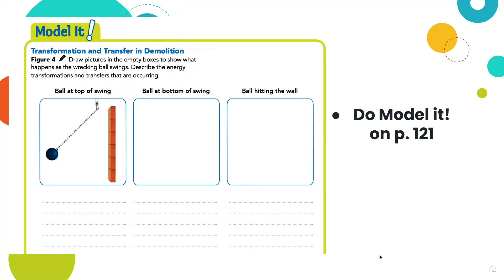On page 121 there's a wrecking ball about to hit a wall. Draw pictures in the empty boxes to show what happens as the wrecking ball swings: the top of the swing is drawn for you, then draw what it looks like at the bottom of the swing before it hits the wall, and finally as it's hitting and going through the wall. On the lines below, describe the energy transformations and transfers occurring — use terms like maximum kinetic energy and minimum potential energy, and note when the wrecking ball transfers energy to the wall. Pause the video to answer.